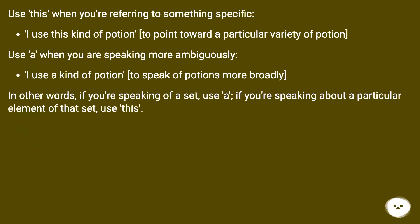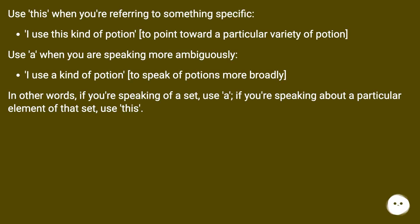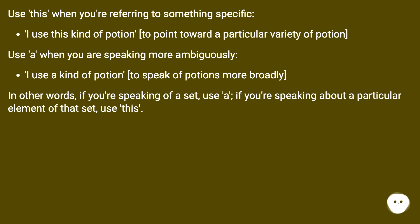Use 'this' when you're referring to something specific. "I use this kind of potion" — to point toward a particular variety of potion. Use 'a' when you are speaking more ambiguously. "I use a kind of potion" — to speak of potions more broadly. In other words, if you're speaking of a set, use 'a'; if you're speaking about a particular element of that set, use 'this'.